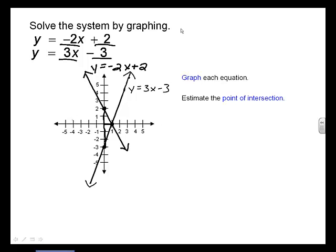Now, estimate the point of intersection. This is where the two lines intersect. Here, this can be estimated to be the point 1, 0.